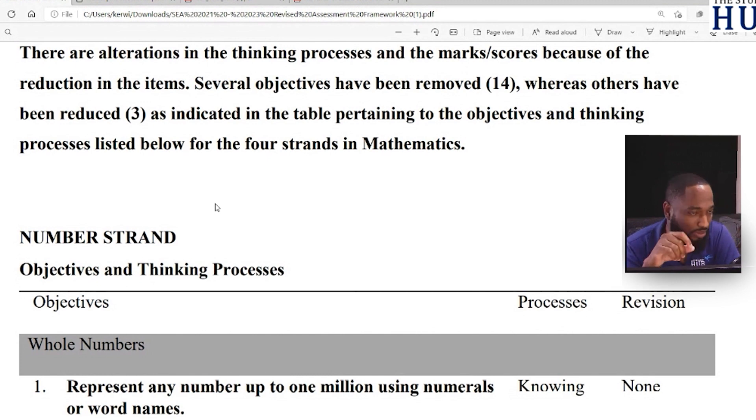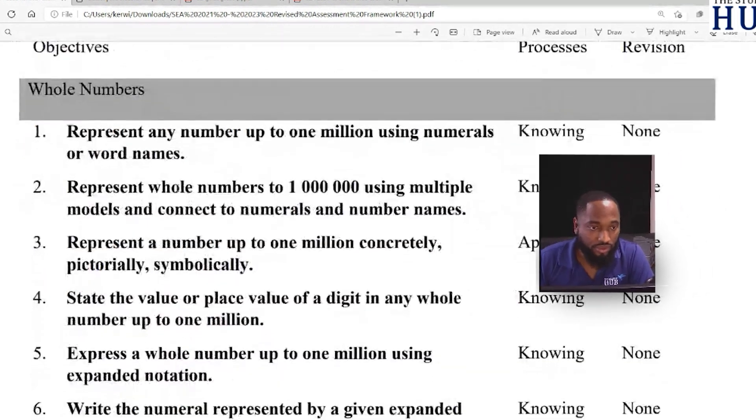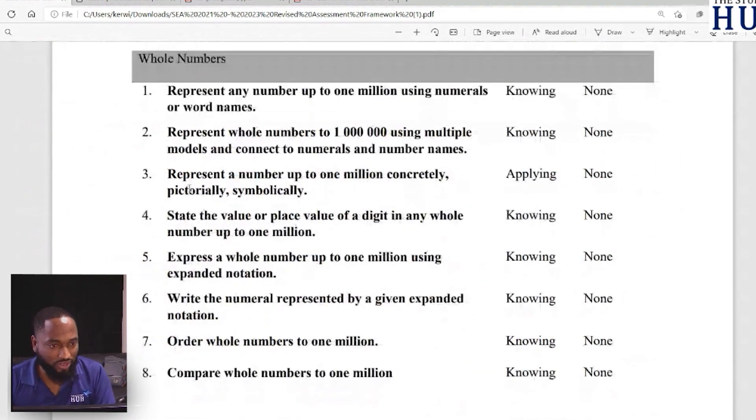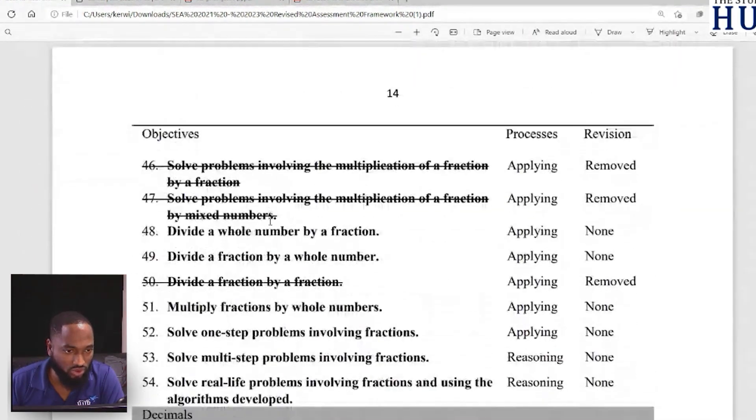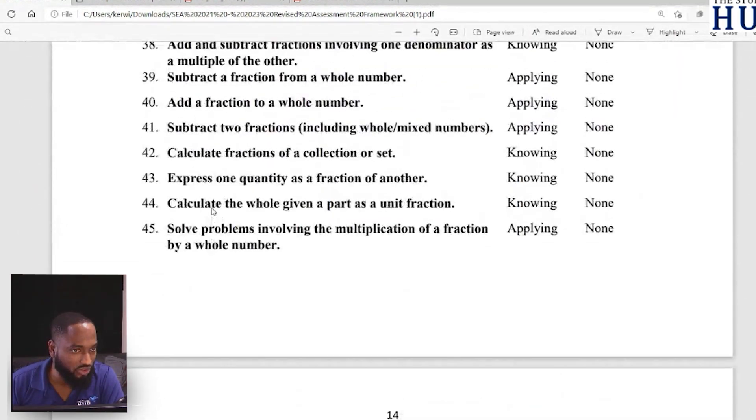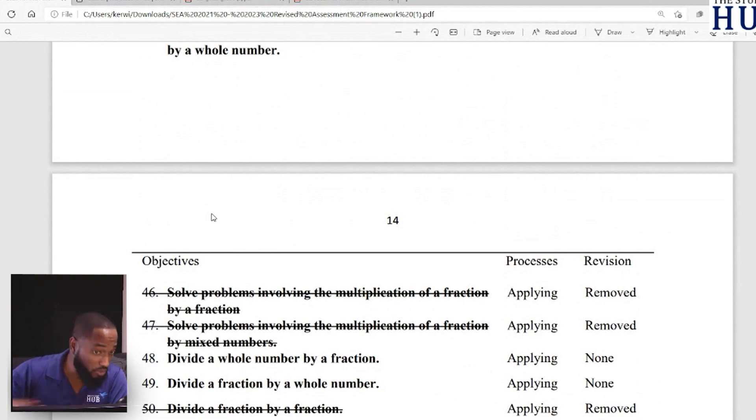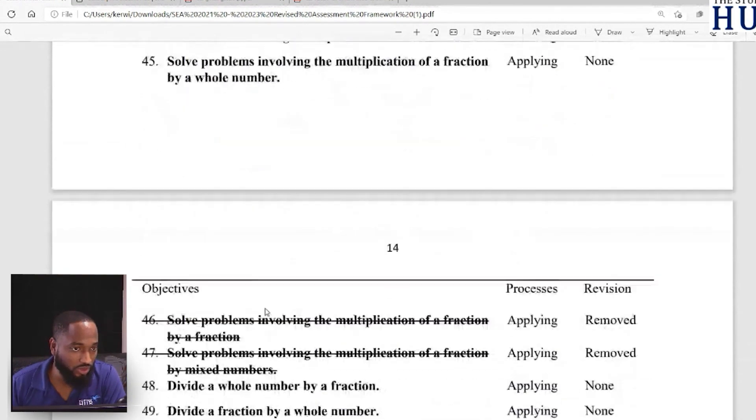Very quickly, let's go through and see individually in each strand what's in. This is important because when you're going through past papers, you may be able to breeze past some questions because according to this, it's not going to appear in the exam. They're going to use this from 2021 all the way to 2023. Whole numbers remains the same, everything in whole numbers. As we scroll down into fractions, we see some things crossed out.